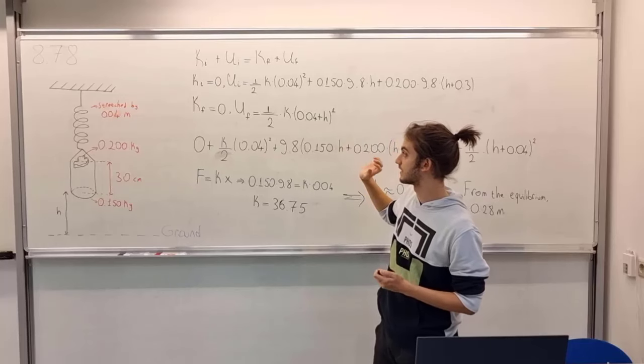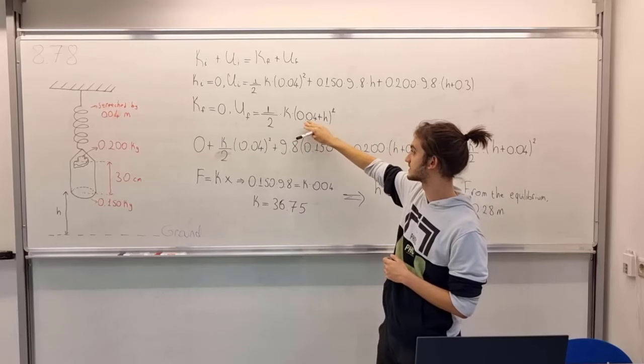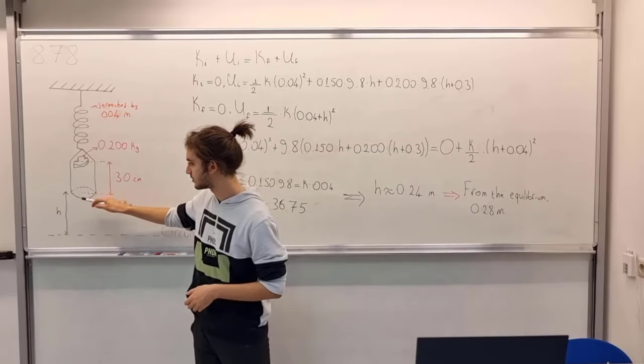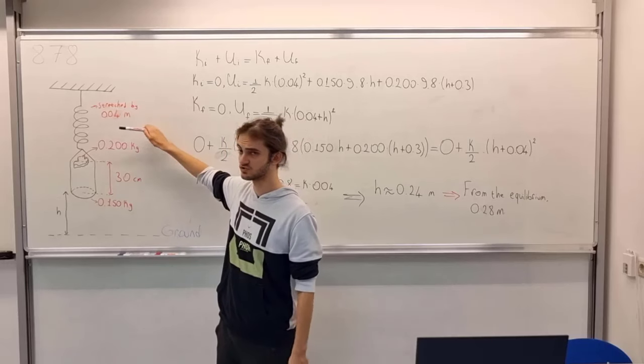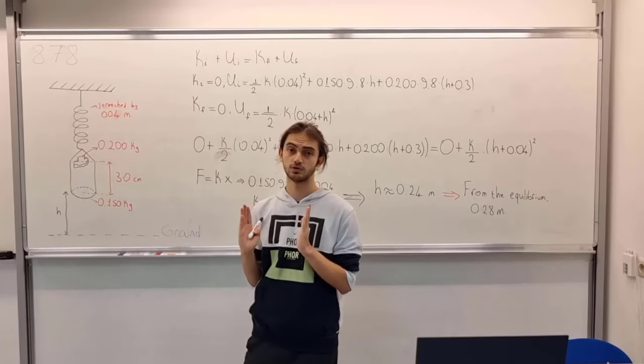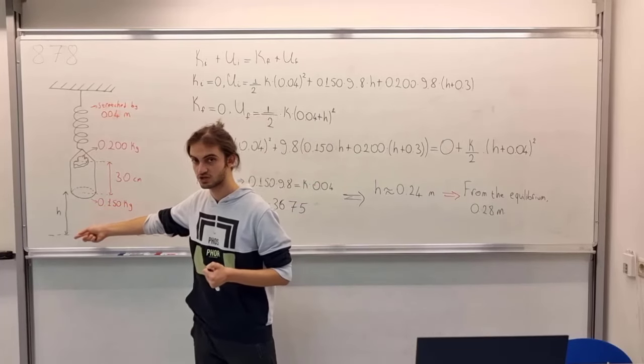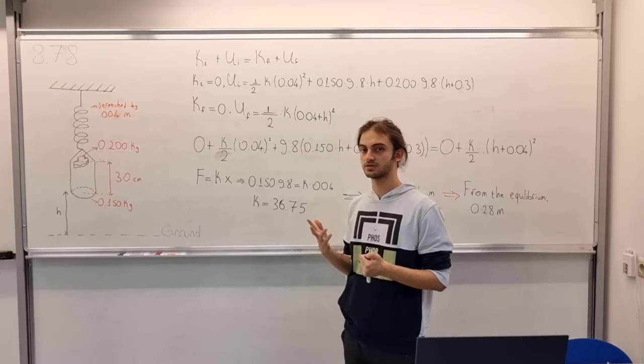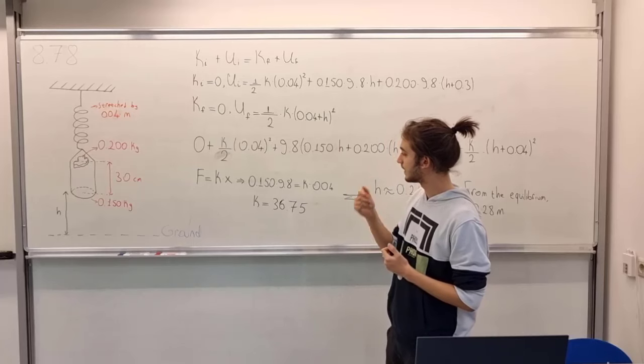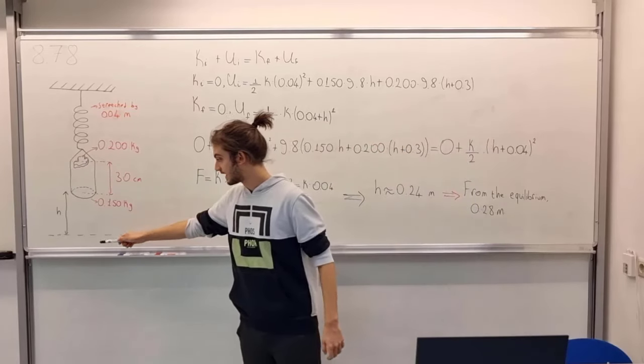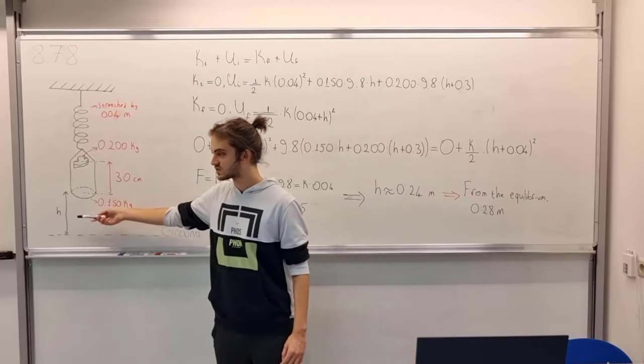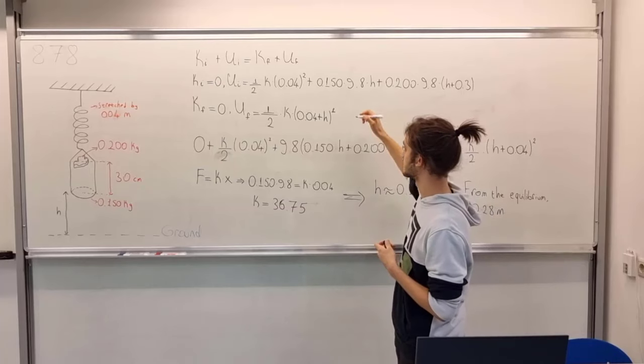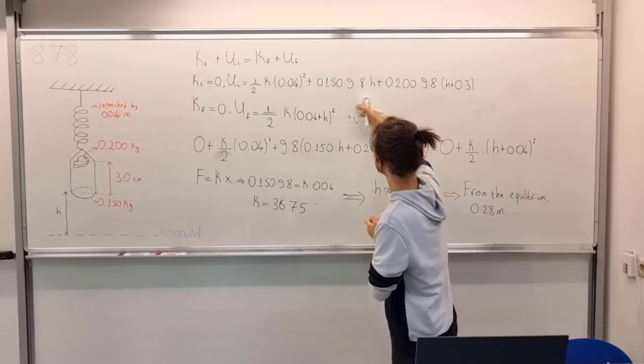Thus we have zero final kinetic energy, and our final potential energy becomes this. Now you might ask why. Let's first focus on this area, on the inside of the parentheses. We have 0.04 plus h. Why? Because at this point, the initial point, we already had 0.04 stretch. So that was the distance from the equilibrium point of the spring. Then now we have something with h. It has to add up, as you can see. Then why don't we have these kind of products? Because at this level, I call it ground, h is zero. So those factors become zero. Then we don't need to include them.